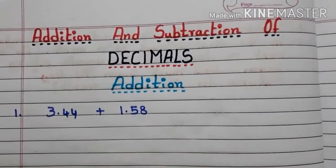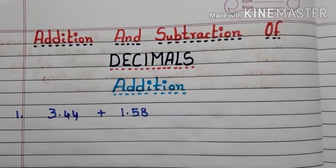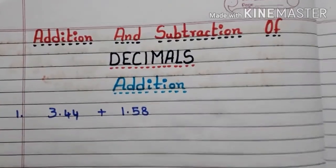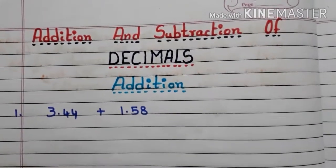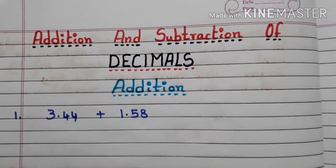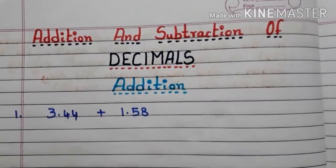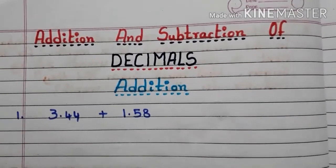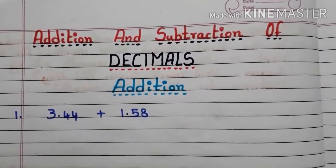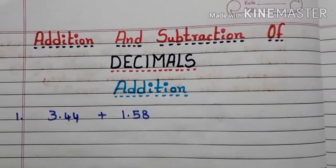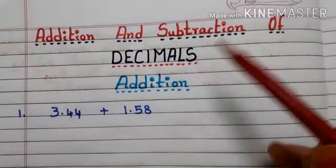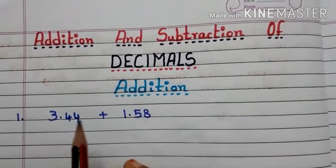If the given decimals are like decimals, we arrange them one below another and perform addition or subtraction. If they are unlike decimals, we first convert them into like decimals, arrange one below another, and then add or subtract. If you want to watch how to convert unlike decimals to like decimals, please click the link in the description box.